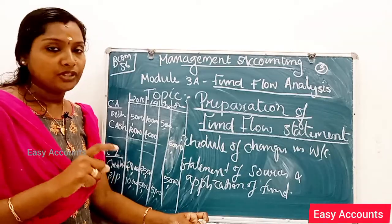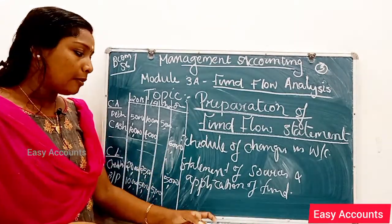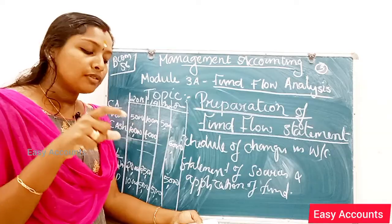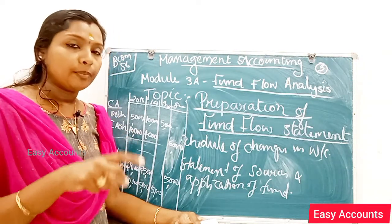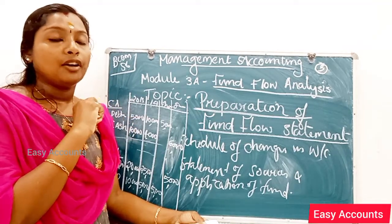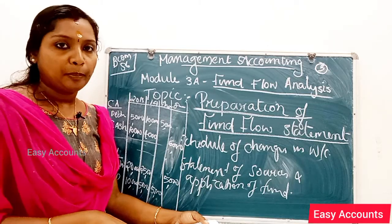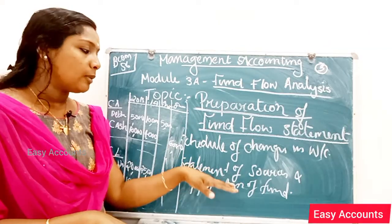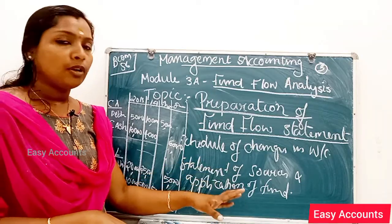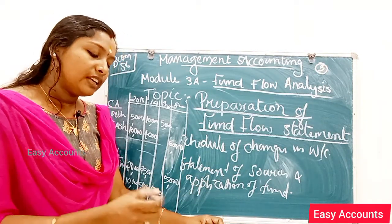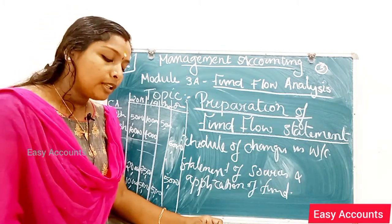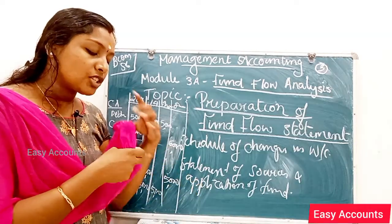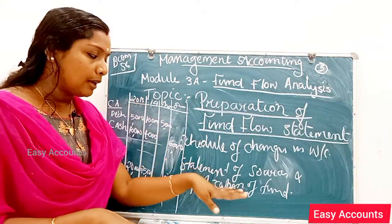This concludes the Schedule of Changes in Working Capital. The second part is the Statement of Sources and Application of Funds. In this statement, we deal with fixed assets, long-term liabilities, and share capital from the balance sheet. Current assets and current liabilities are handled in the Schedule of Changes in Working Capital. We also incorporate additional information and adjustments into this statement.